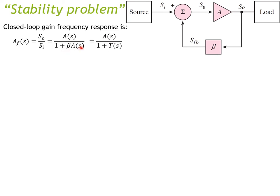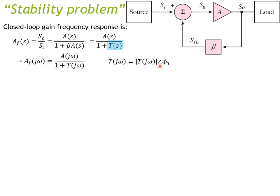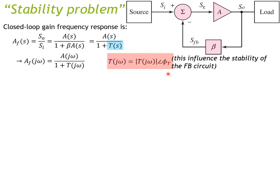T equals β·A. Since A is also a function of frequency, T(s) written in terms of jω is a complex transfer function with a magnitude and a phase. This gives us the closed-loop gain transfer function. The loop gain T influences the stability of the feedback circuit.